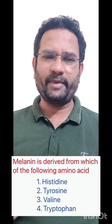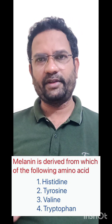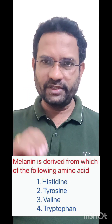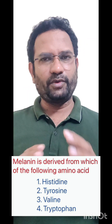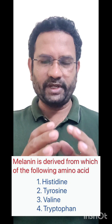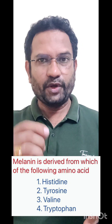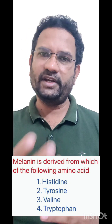Valine is a branched-chain amino acid, and tryptophan is an aromatic amino acid. So these four questions are from the 2019 ESIC paper. Make a habit of reading like this — take a question and understand each and every answer option. We will be covering at least four questions per video. I hope this is useful. All the best.